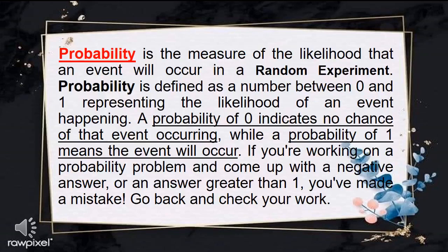Let us first define the word probability. Probability is the measure of the likelihood that an event will occur in a random experiment. It is defined as a number between 0 and 1. A probability of 0 indicates no chance of that event occurring, while a probability of 1 means the event will certainly occur. If you come up with a negative answer or an answer greater than 1, you've made a mistake.